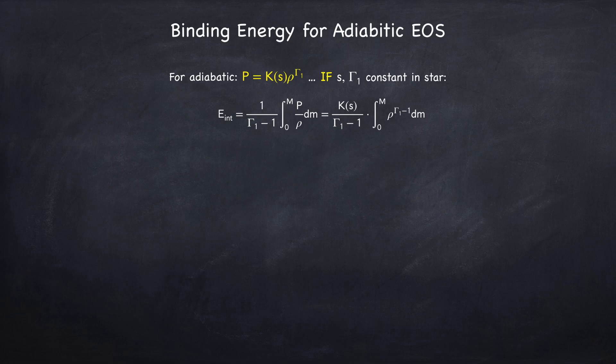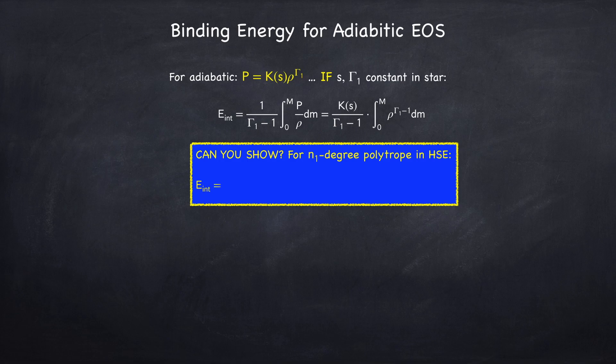In this case, I'll leave it as another exercise. See if you can show that for an n-degree polytrope in hydrostatic equilibrium, the internal energy has the following result. Now here I've labeled n1 to specify that this is the adiabatic index, and so n1 is the polytrope index associated to the adiabatic index gamma 1.